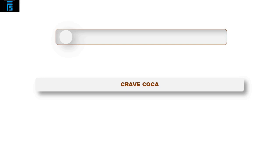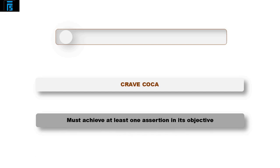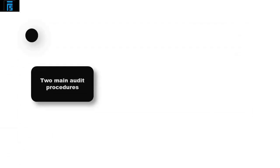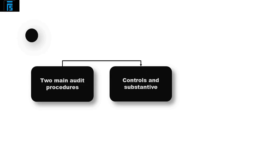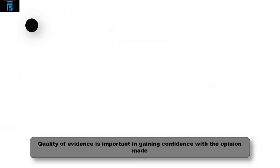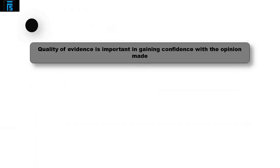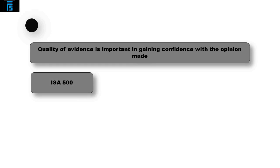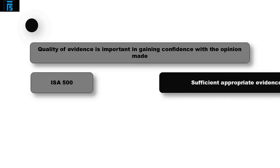CRAVE POC can assist in remembering these assertions. Every substantive test must achieve at least one assertion in its objective. These financial statement assertions are covered in more detail in another video. We have now identified the two main audit procedures — controls and substantive — discussed the differences and objectives. Now we need to consider the quality of evidence required on an external audit.